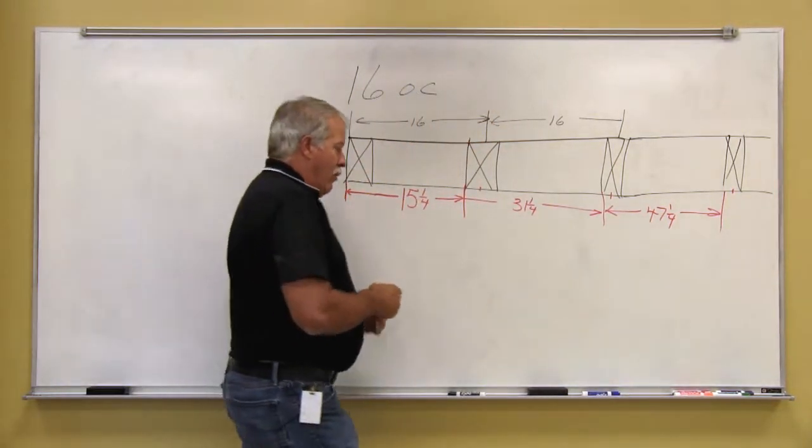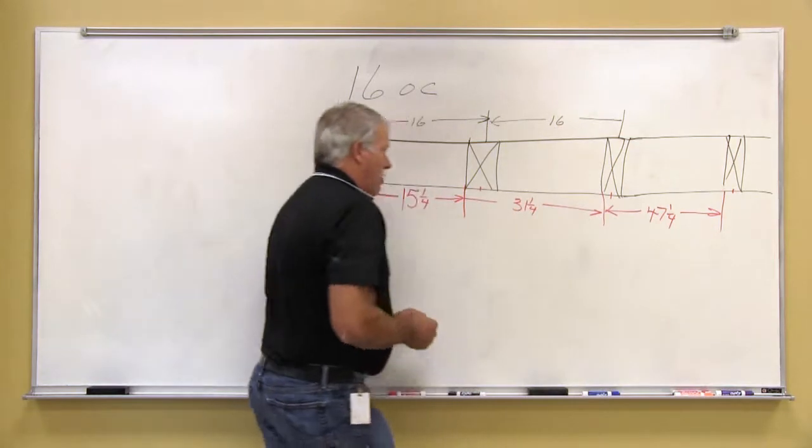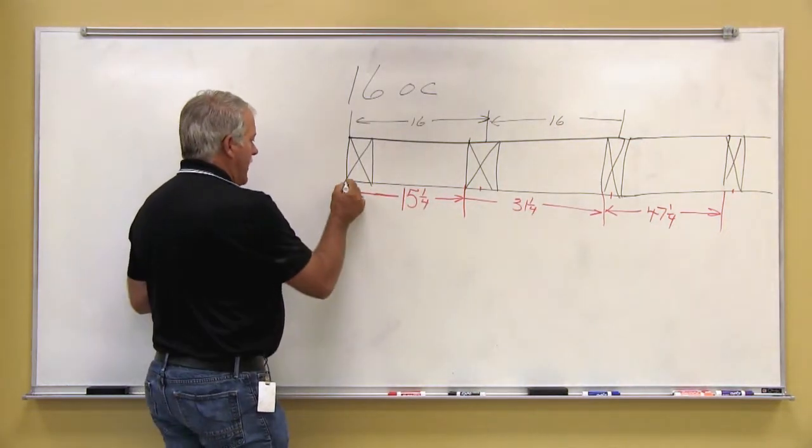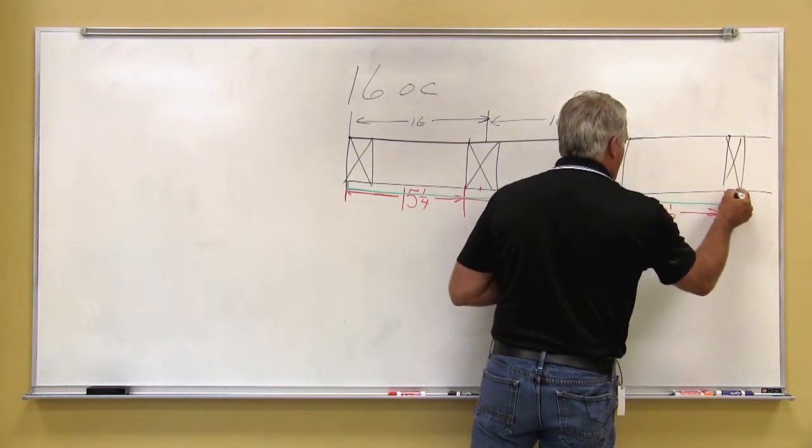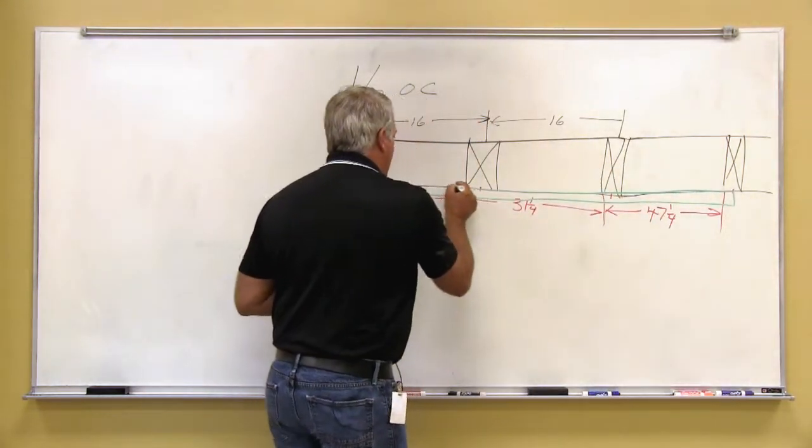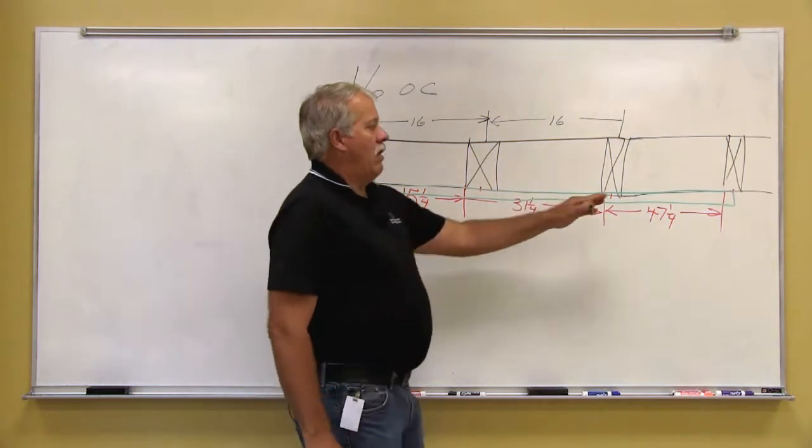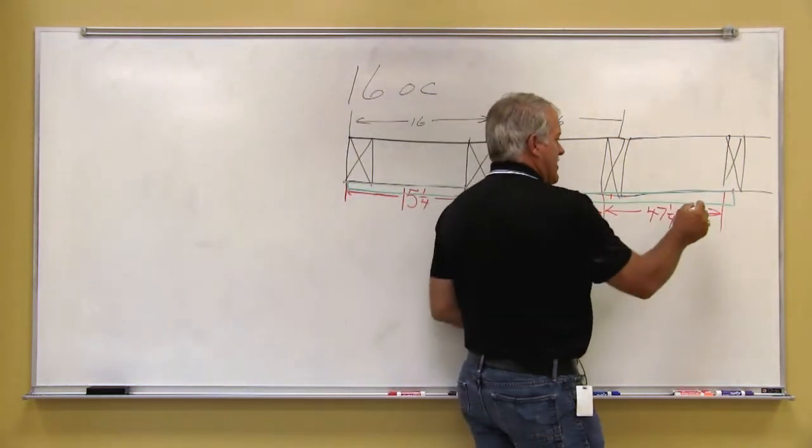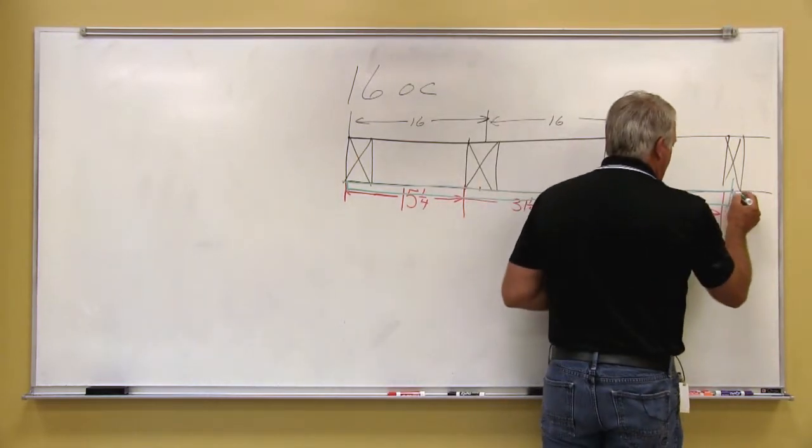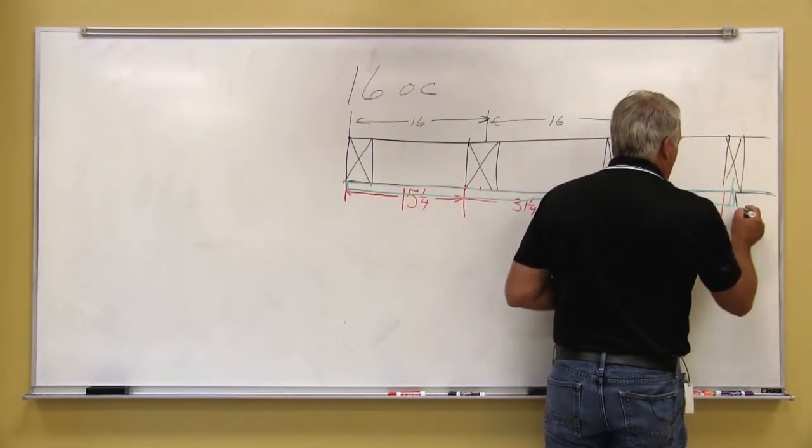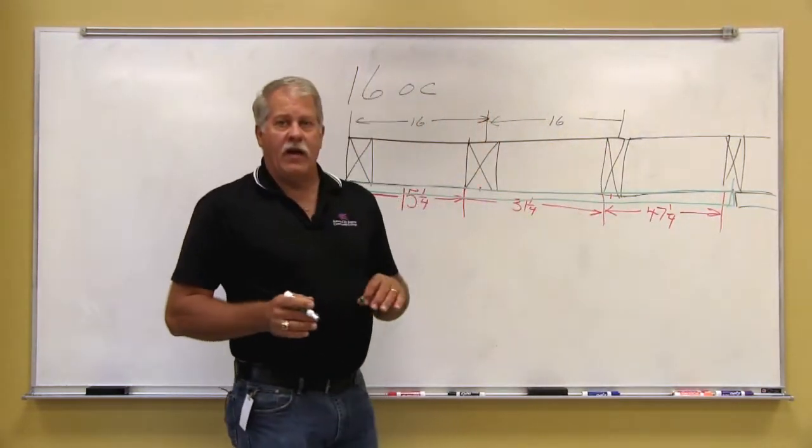So that when we go to sheet this particular wall, I will lay a piece of sheeting on here and that piece of sheeting that measures 4 foot will break on that stud so that I have something to nail to before I put the next piece of sheeting on to continue on that wall.